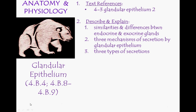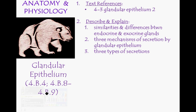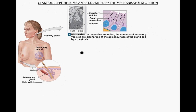Welcome to another screencast. This is glandular epithelium 2, a continuation of the discussion about glandular epithelium. In part 1 we described and explained similarities and differences between endocrine and exocrine glands. This time we're going to look at three mechanisms of secretion and three types of secretions. The mechanism of secretion is the way that the secretion actually leaves the cell, and there are three of them.